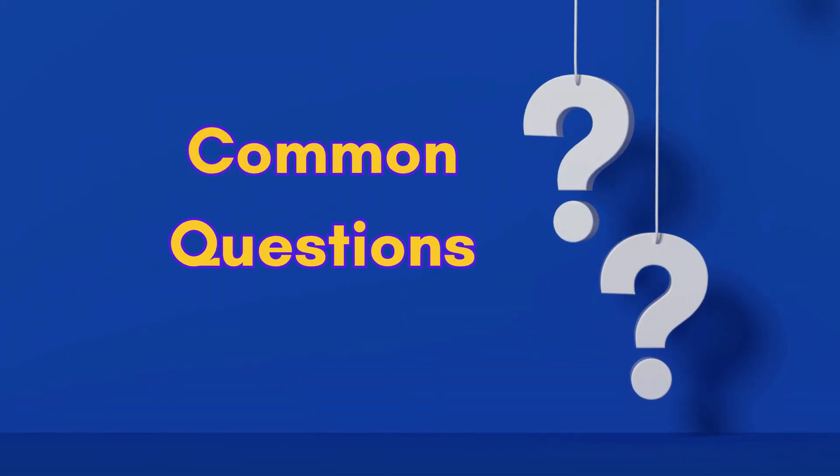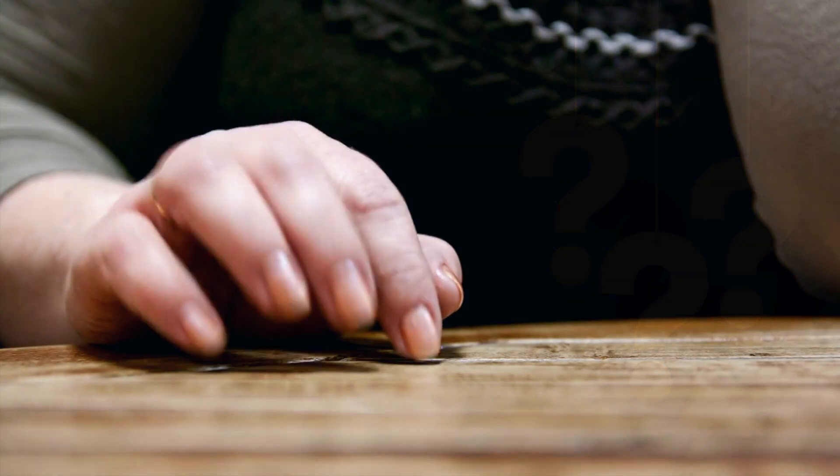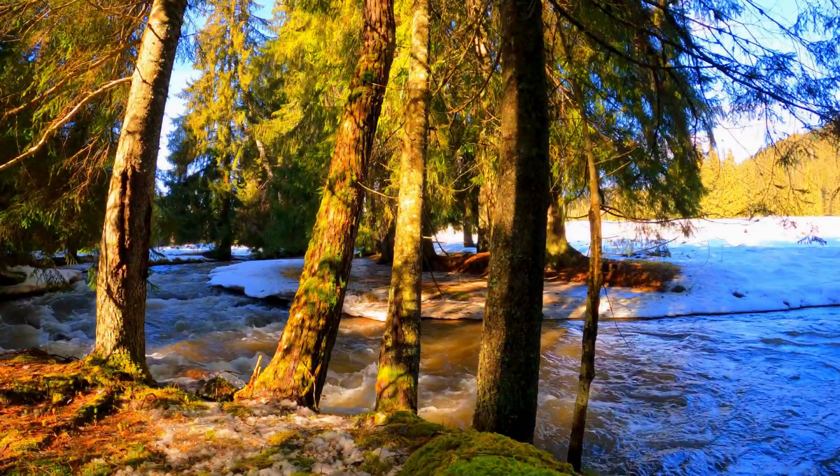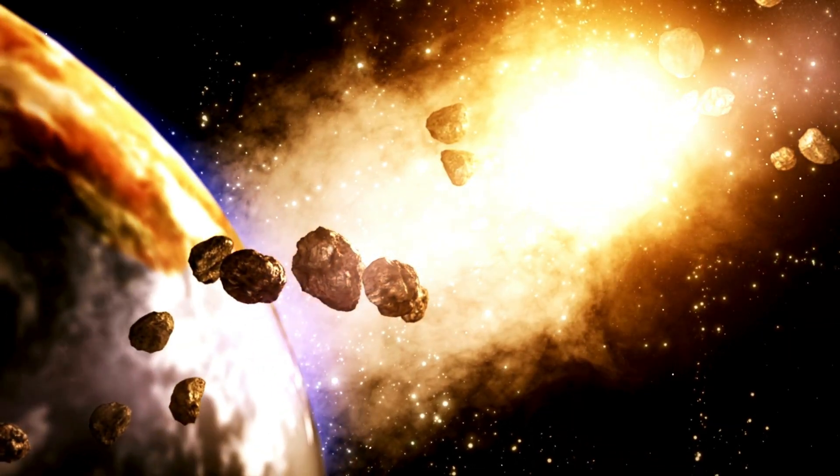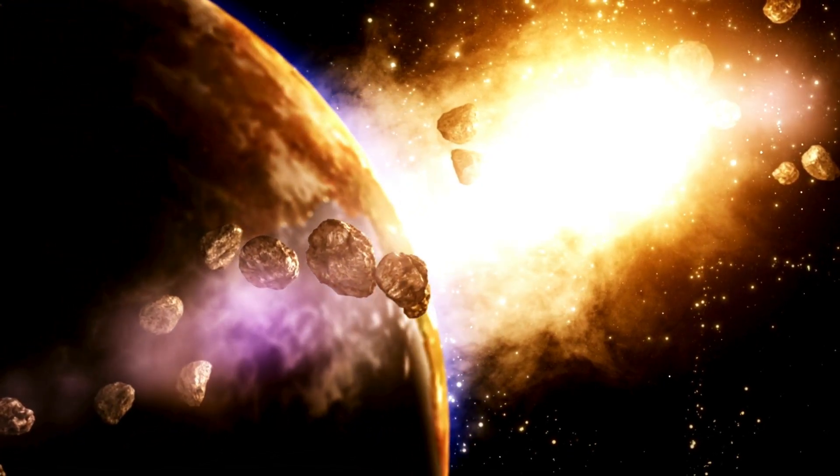Common questions about the giant impact hypothesis. Now, we know what you're thinking. What about the water on Earth? Did the impact destroy it? Great question. Turns out, Earth probably regained its water later through comets and asteroids delivering fresh supplies. So no, the collision didn't leave us high and dry forever.